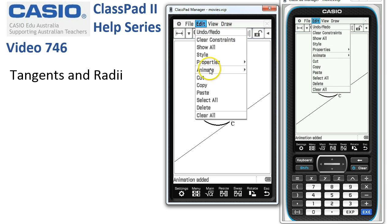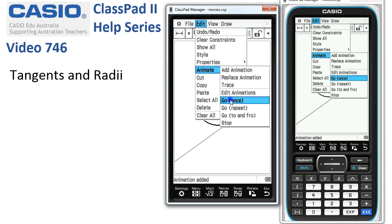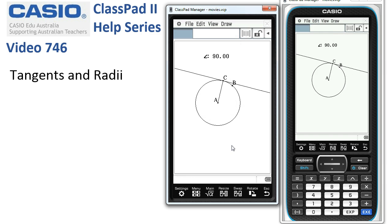And then edit, animate, go once. ClassPad now animates the point around the path for us, and that was fairly easy to do. But you'll notice the angle between the radius and the tangent is staying at 90 degrees.